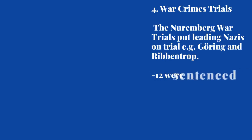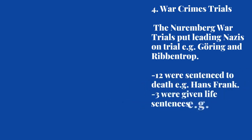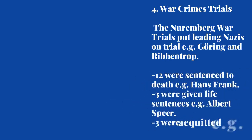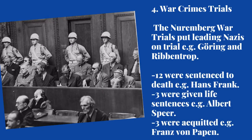The Nuremberg war trials put leading Nazis like Goring and Ribbentrop on trial. Twelve of these Nazis were sentenced to death, three were given life sentences, and three were acquitted.